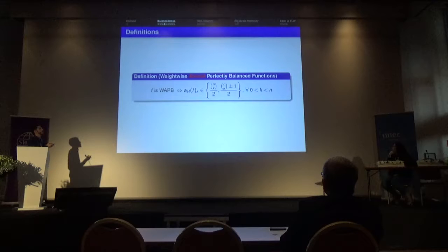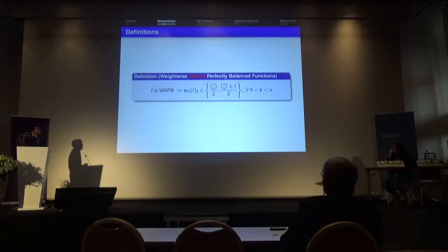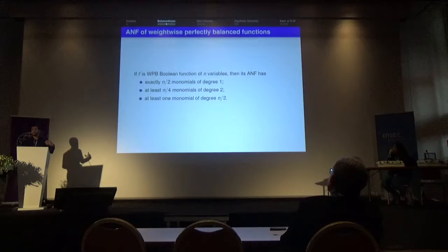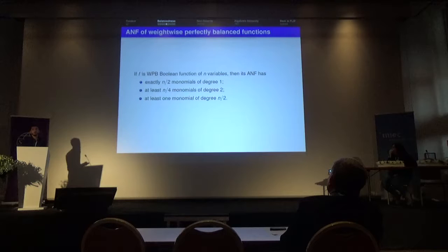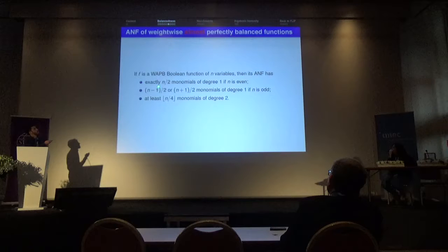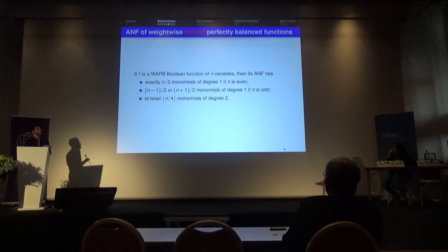We can also generalize the definition to almost perfectly balanced functions when the number of variables is not a power of two. We also have results on the algebraic normal form of WWPB functions: a weight-wise perfectly balanced function must have exactly n/2 monomials of degree one, n/4 monomials of degree two, and at least one monomial of degree n/2. Similar results hold for weight-wise almost perfectly balanced functions, with n/2 monomials of degree one if n is even, and a slight change if n is odd.